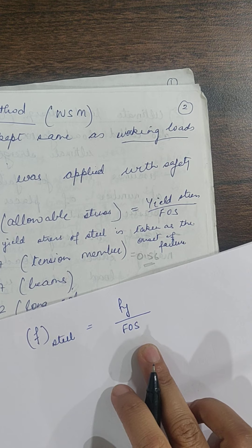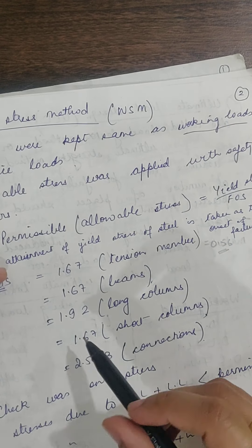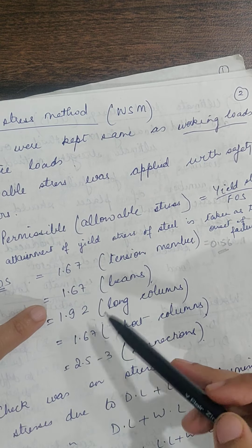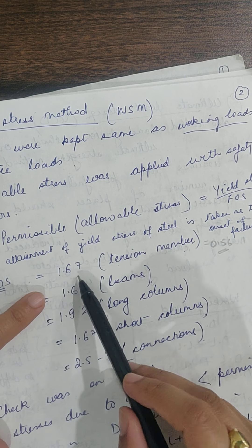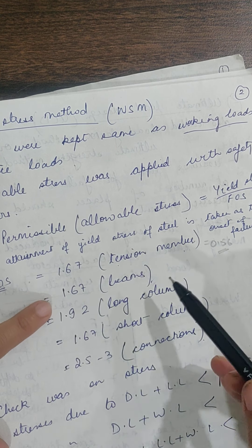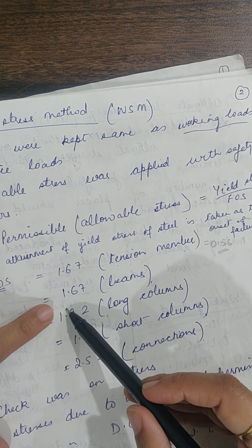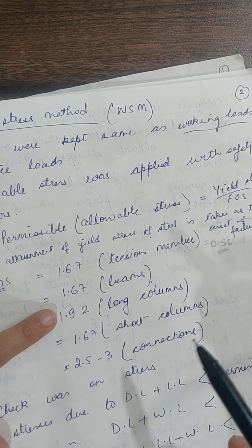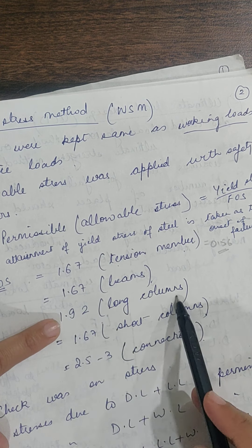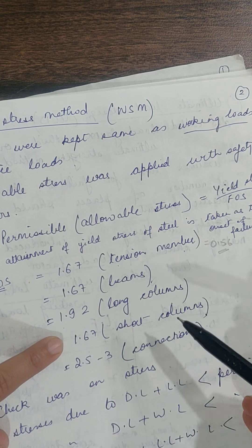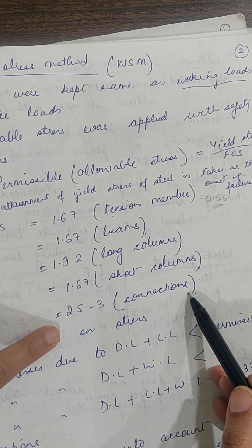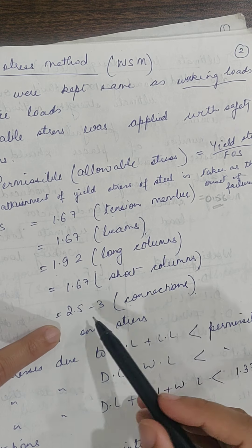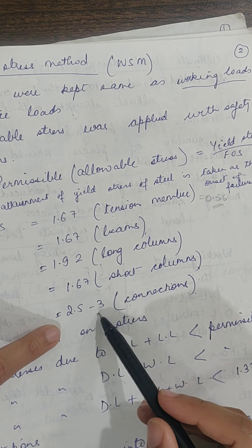The value of the factor of safety varies by member type as specified by the code. For tension members, the factor of safety is 1.67; for beams it is also 1.67; for long columns it is 1.92. The maximum factor of safety is on connections, which is between 2.5 to 3.